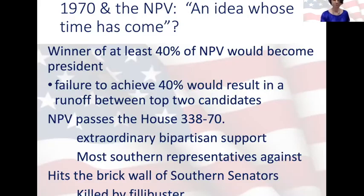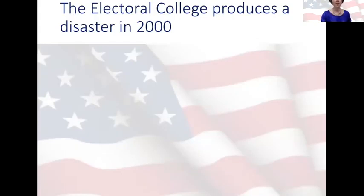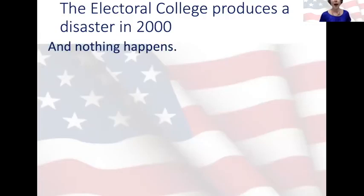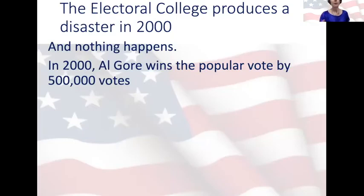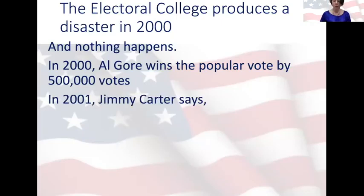Then in 2000, the unthinkable happened: the Electoral College produced the disaster of Al Gore winning the popular vote and losing the Electoral College once the dust settled on contested ballots in Florida. And as we all know, the Electoral College was — nothing happened. Nothing happened. Indeed, in 2001, Jimmy Carter, speaking as co-chair of the Federal Commission on Electoral Reform, said: 'It's a waste of time to talk about changing the Electoral College. I'd predict that 200 years from now we will still have the Electoral College.' I suspect he's right.